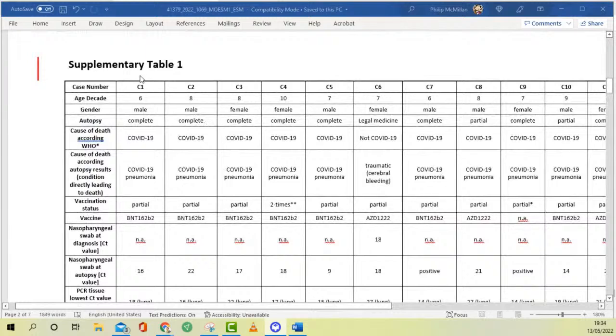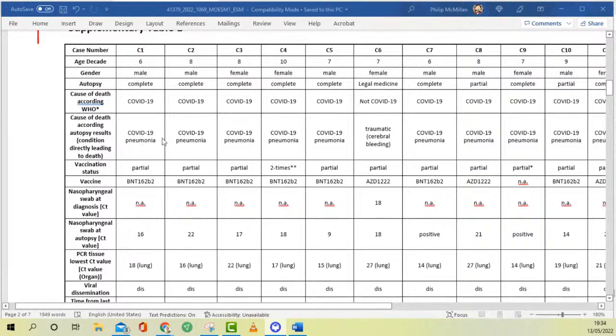This is the supplementary document: high viral loads and autopsy study. If you roll down, you have supplementary table one. These are the case numbers, each case C1, 2, 3 all the way up to 29. It shows their age here in decades, so the sixth decade, eighth decade, the tenth decade that's coming up to 100 years old, their gender whether male or female, and whether or not this was a complete autopsy, partial autopsy, or legal medicine.